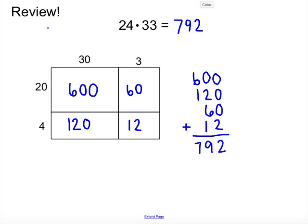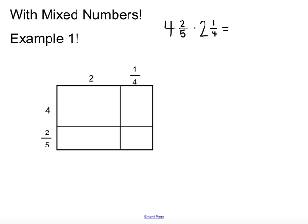So, there is example 1. Then, we're going to actually go on to do one with mixed numbers. And since we know how to multiply fractions, this is going to be very simple, especially using our generic rectangle. So, again, we have 4 and 2 fifths, and 2 and a fourth. That is our problem.